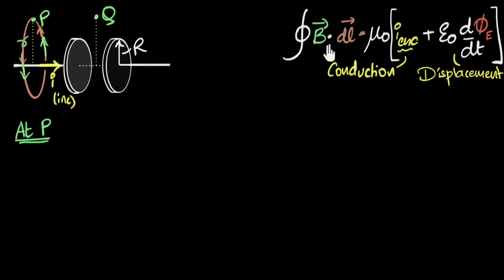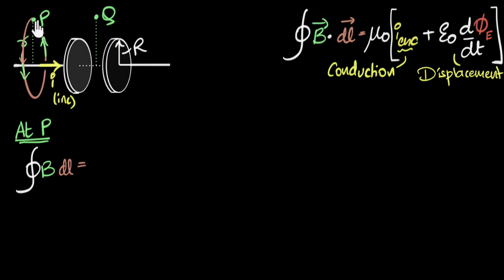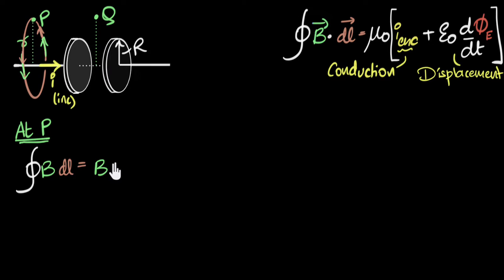This is the same procedure we used before with Ampere's law. The left-hand side becomes the integral of BdL. By circular symmetry, B is the same everywhere on the loop, so we can pull B out. The integral of dL around the loop is just the circumference, which is 2πr. So the left-hand side is B × 2πr.